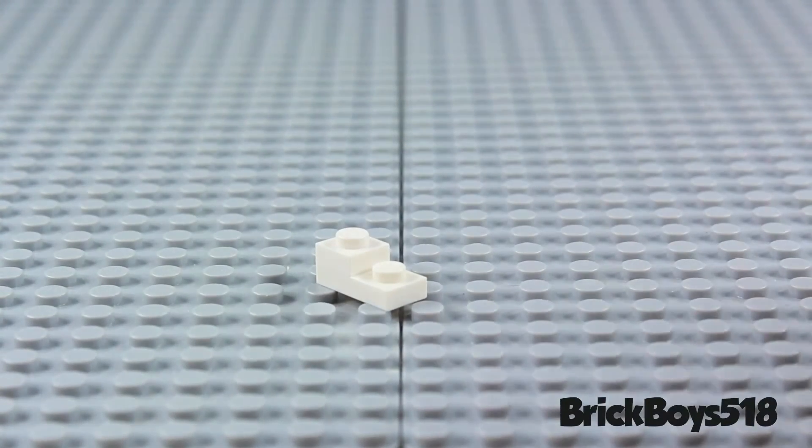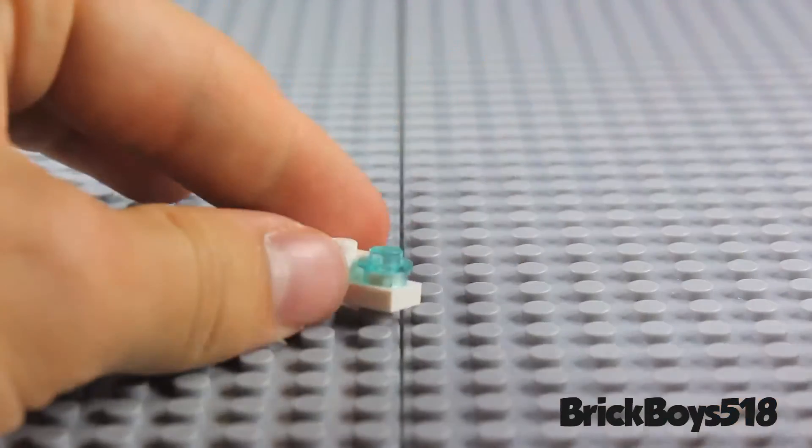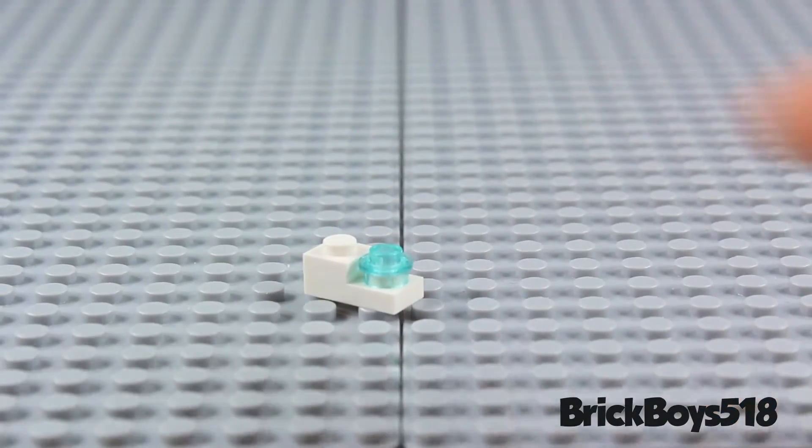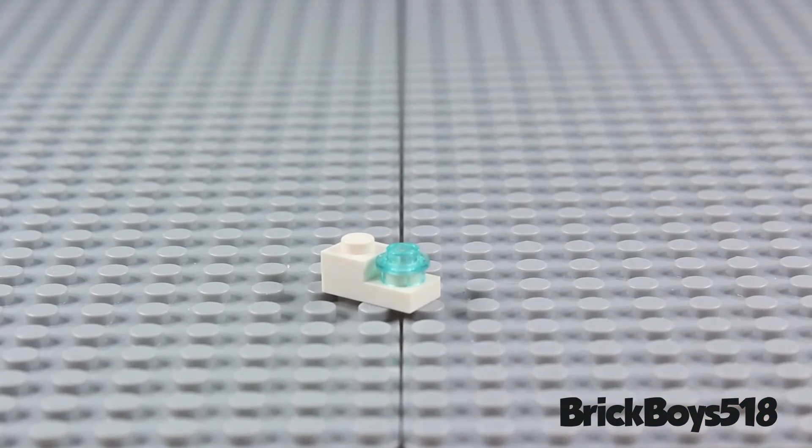And then next you're going to take a 1x1 stud. I'm using a trans blue stud. Just like so. And this will be the slide that your mini figure is inspecting.